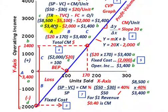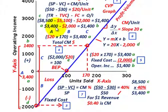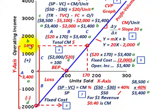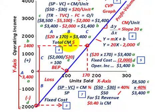Let's go back to our calculations and see where they tie into our graph. The $3,400 in total contribution margin dollars represents the spread on our y-axis — from negative $2,000 in operating income up to a positive $1,400. So we have that spread: negative $2,000, up to zero, then up to $1,400. That gives us the $3,400 in total contribution margin.